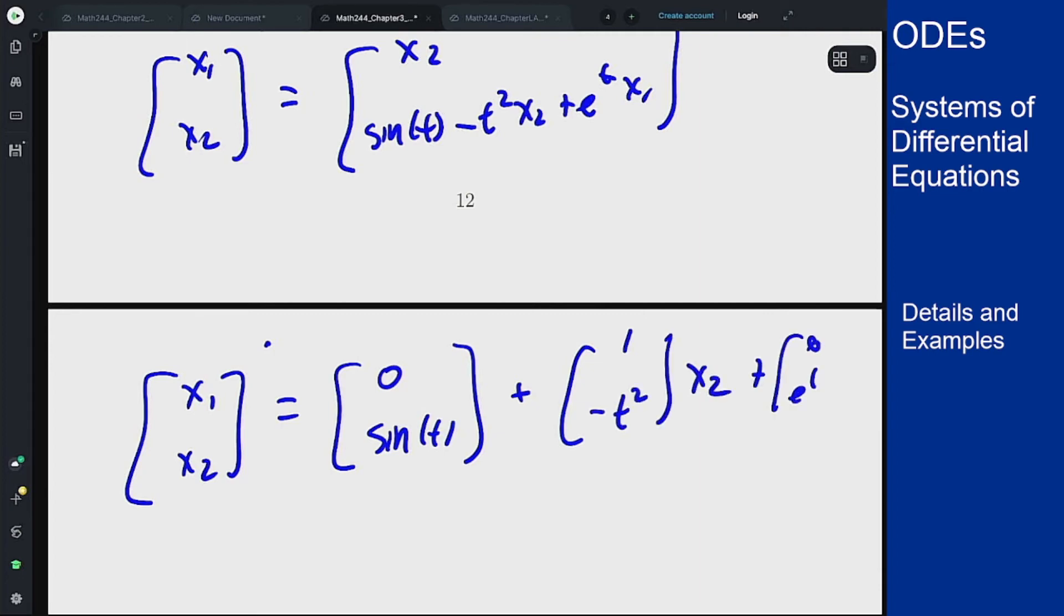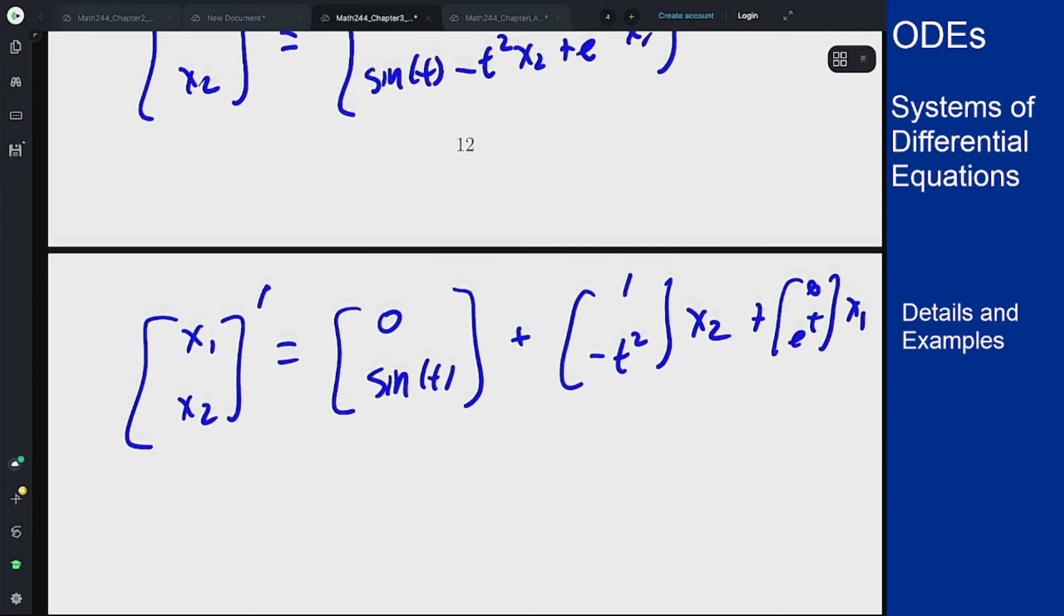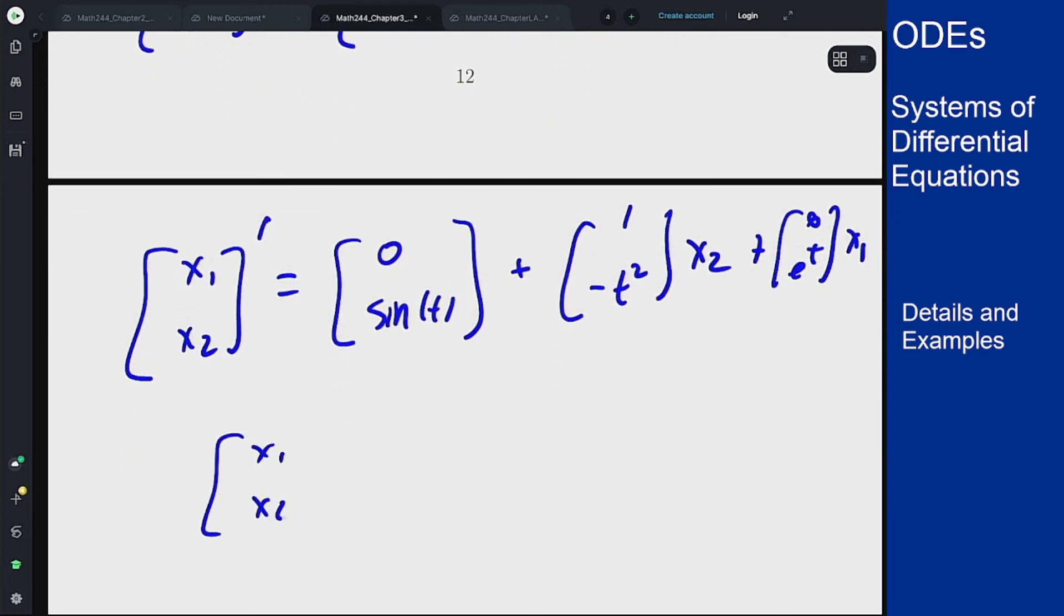Or I can put this in an actual matrix form, x1, x2 prime equals 0 e to the t, 1 minus t squared times x1, x2, plus 0 and sine of t.